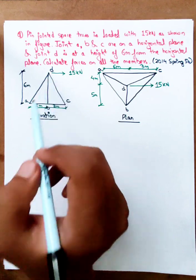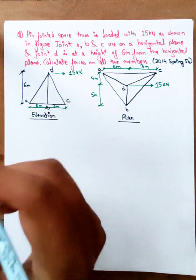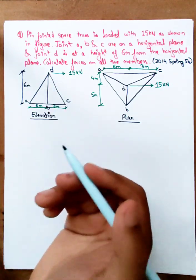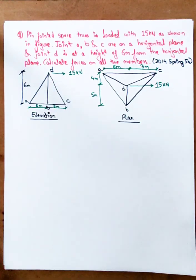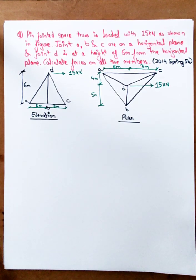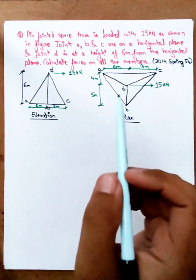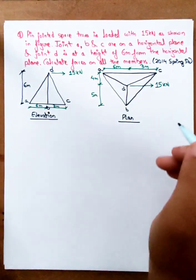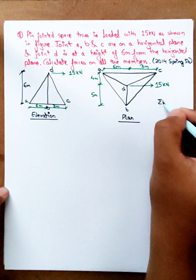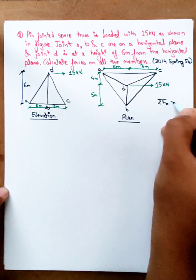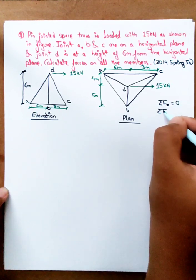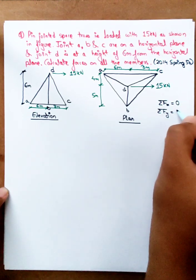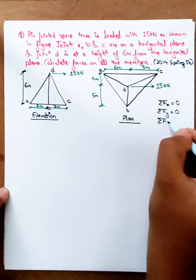We need the joint method for space truss. For this numerical method, we need: summation of Fx equals 0, summation of Fy equals 0, and summation of Fz equals 0.